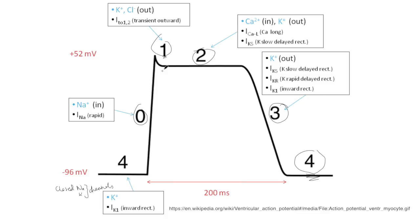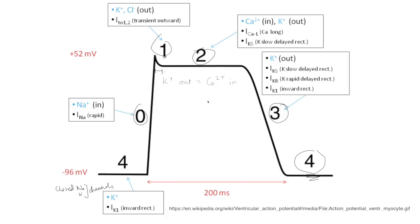This occurs for a tiny bit of time, and then slow L-type calcium channels open. These L-type calcium channels allow a calcium influx that helps to electrically balance out the potassium efflux through the delayed potassium channels, and this causes a plateau in the potential.